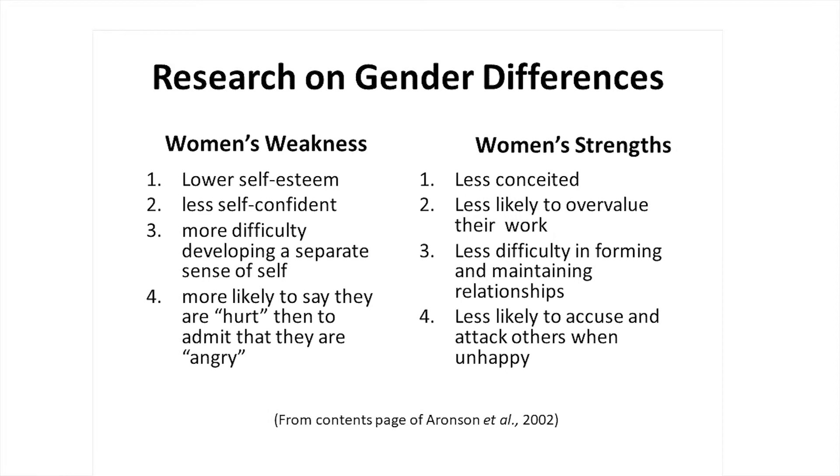In Carol Tavris' book The Mismeasure of Women, this is expressed really well — lots of psychological research on sex differences was designed to find out why women were not as good as men, why they weren't as successful, intelligent, motivated, or perceptive. It positioned women as inferior.